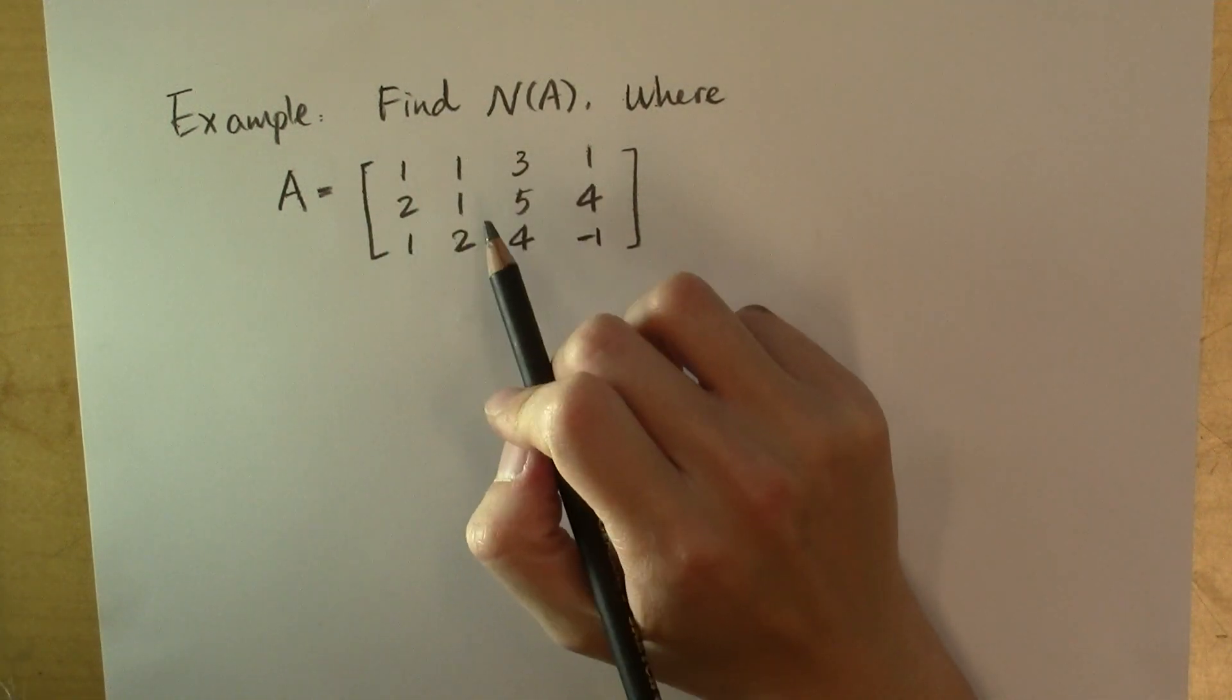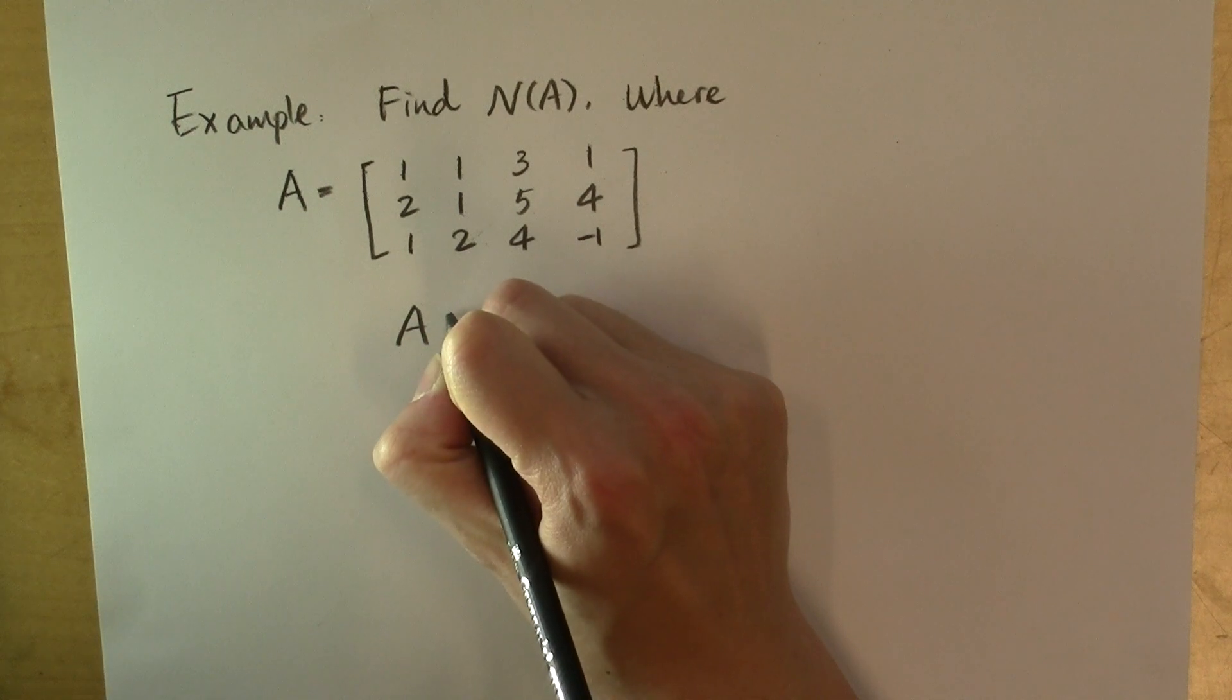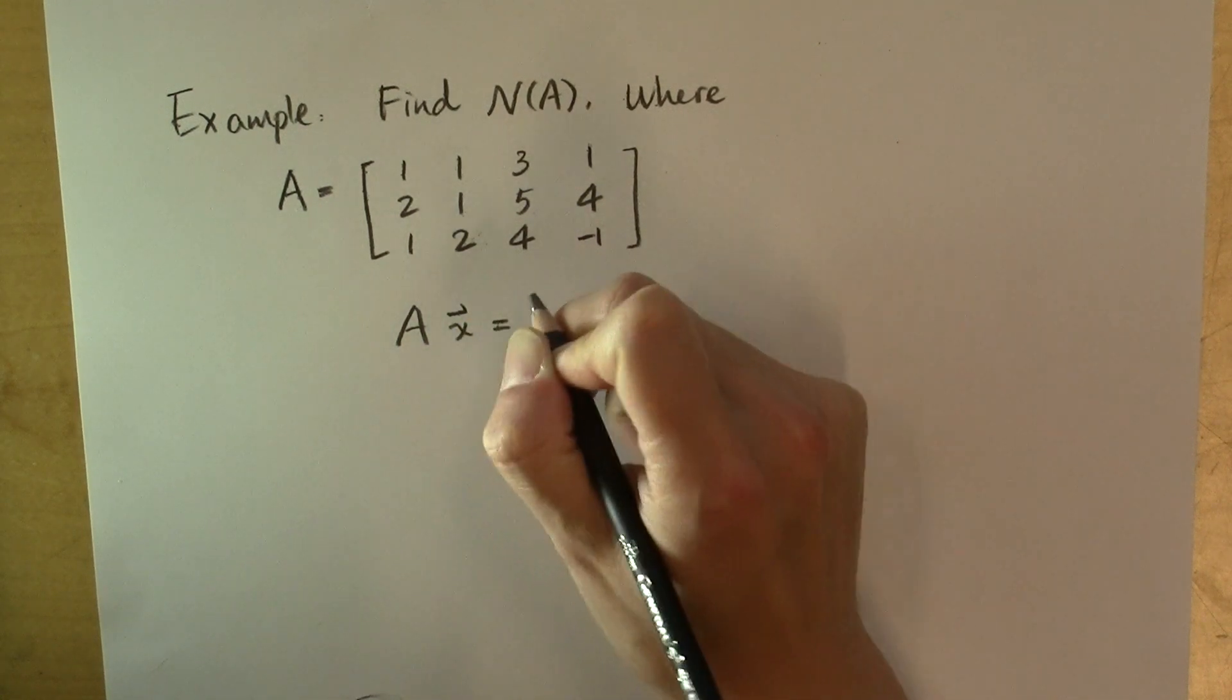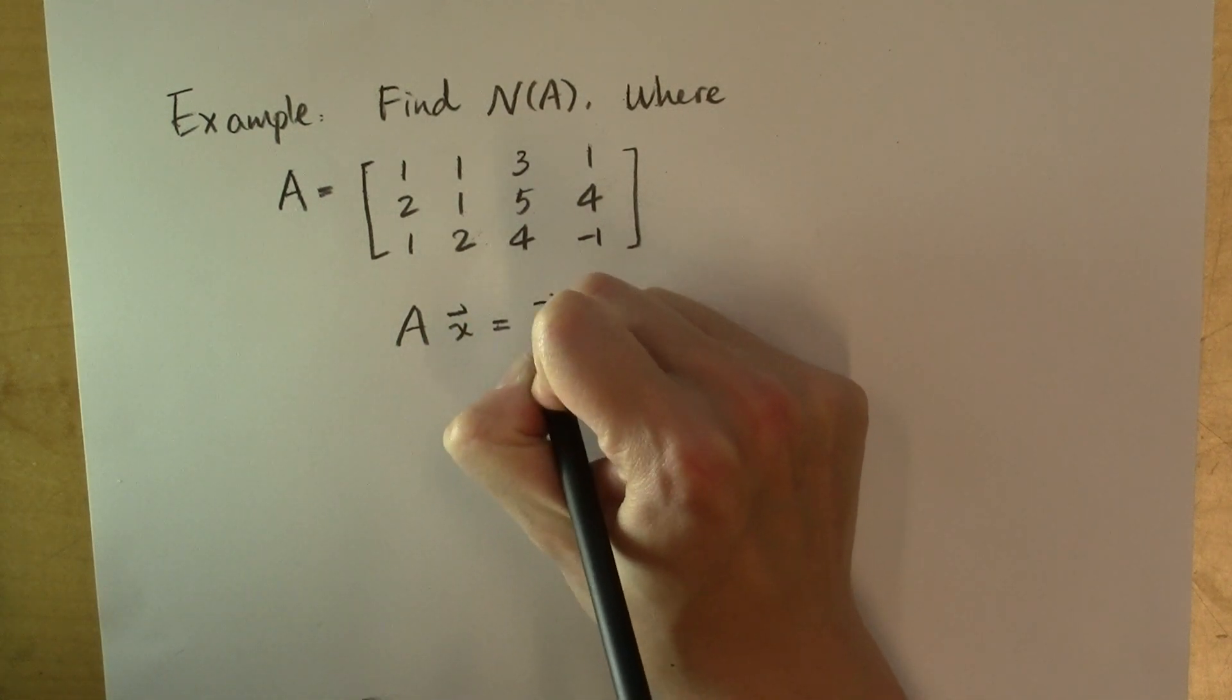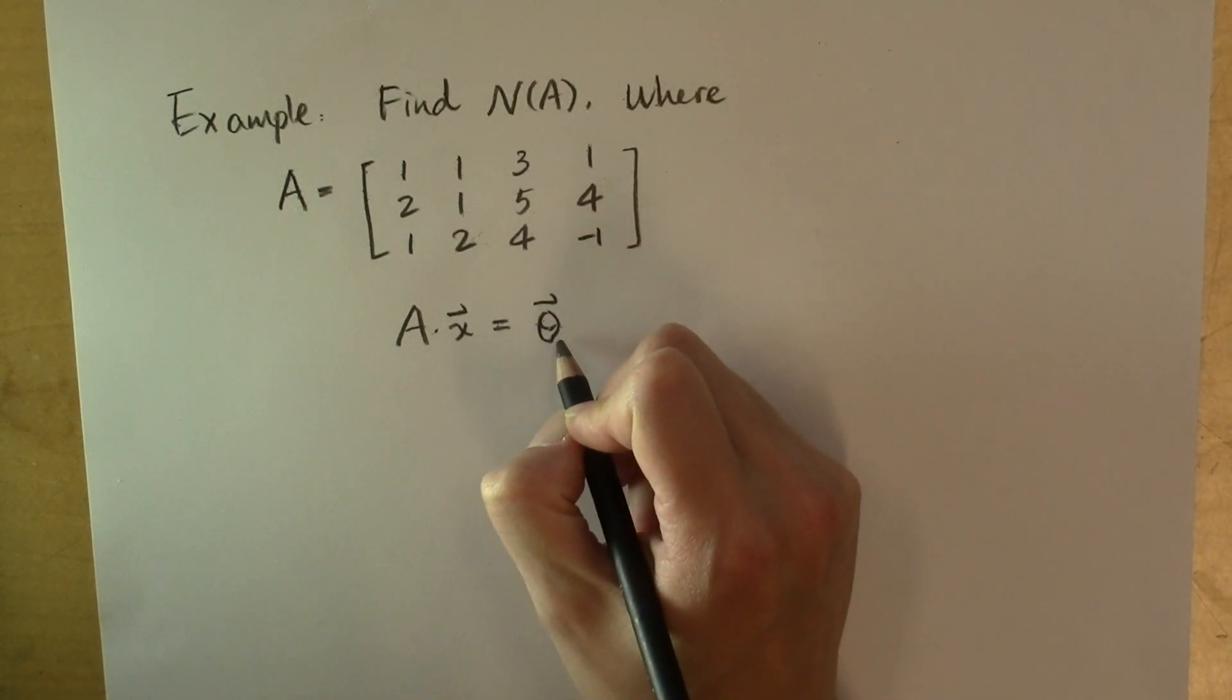Here is an example of how to find the null space of a matrix. By definition, the null space of A contains vectors x that are solutions to this homogeneous linear system A times x equal to the zero vector.